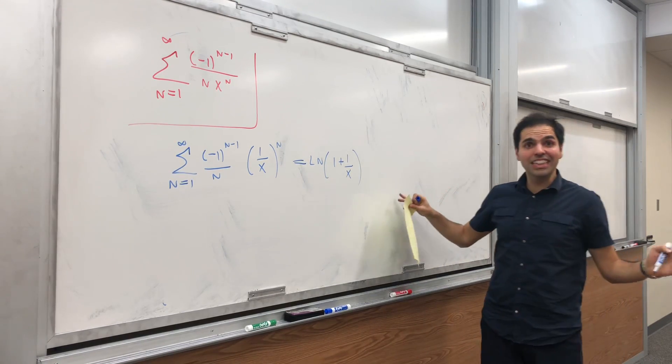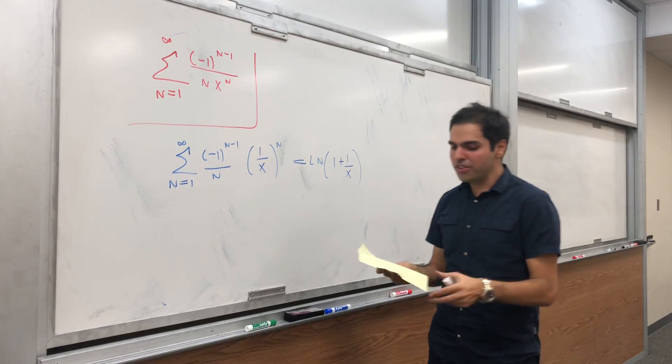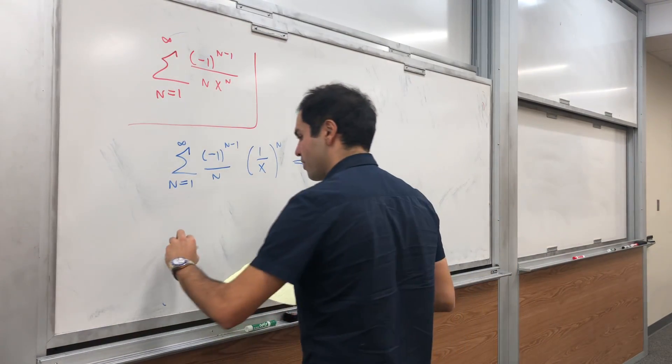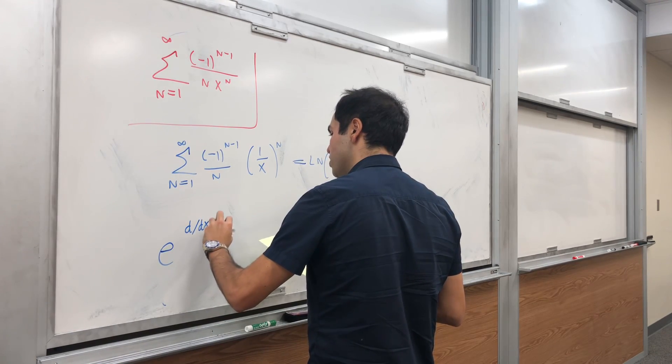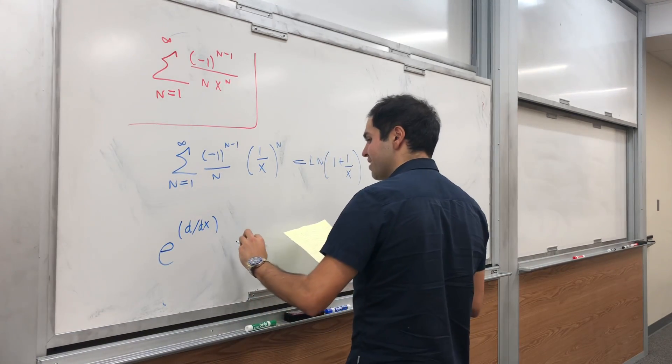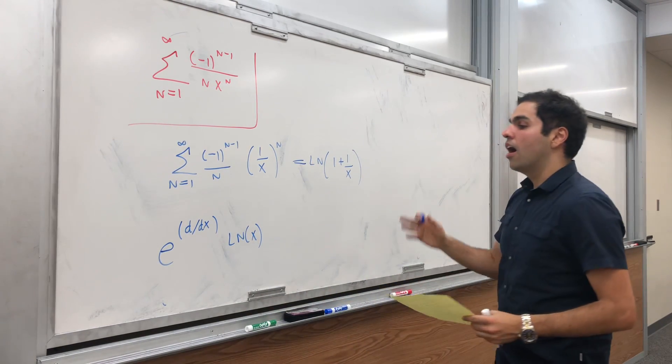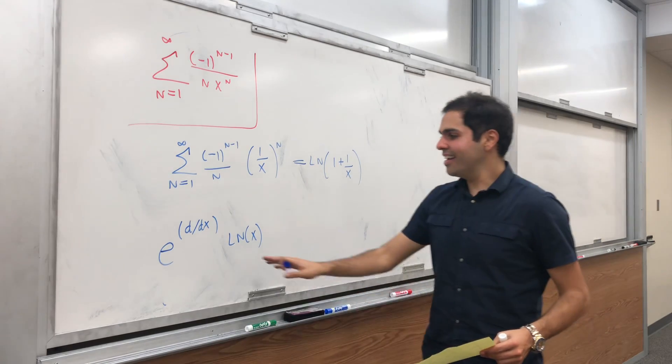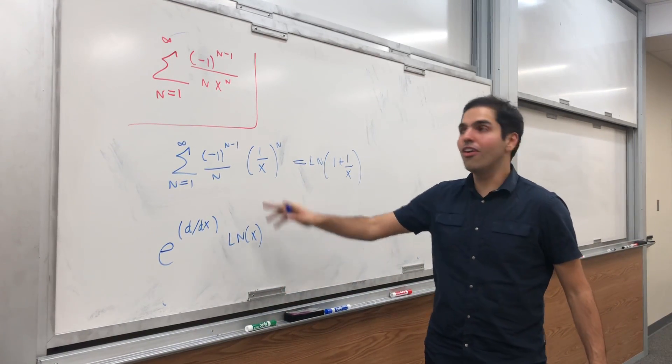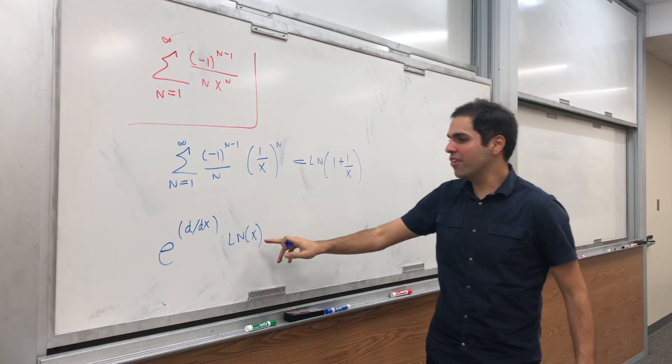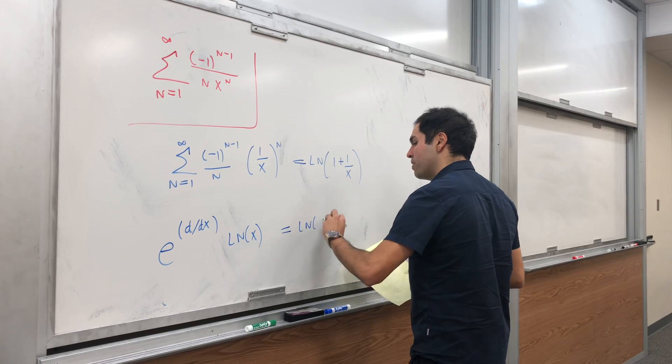But suppose you didn't know that and you want to do it with exponential derivatives. Here's how you can do it. So let's apply the exponential derivative: e^(d/dx) of ln(x). On the one hand, again assuming it's analytic, so let's not quite do it at 0, let's do it sort of away from 0. This equals ln(x + 1).